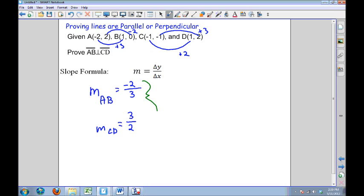I'm going to make the observation that these two slopes are negative reciprocals of each other. And since slopes are negative reciprocals of each other, line segment AB must be perpendicular to line segment CD. If I was showing that lines were parallel, I would need to show that these slopes were equivalent or had the same value.